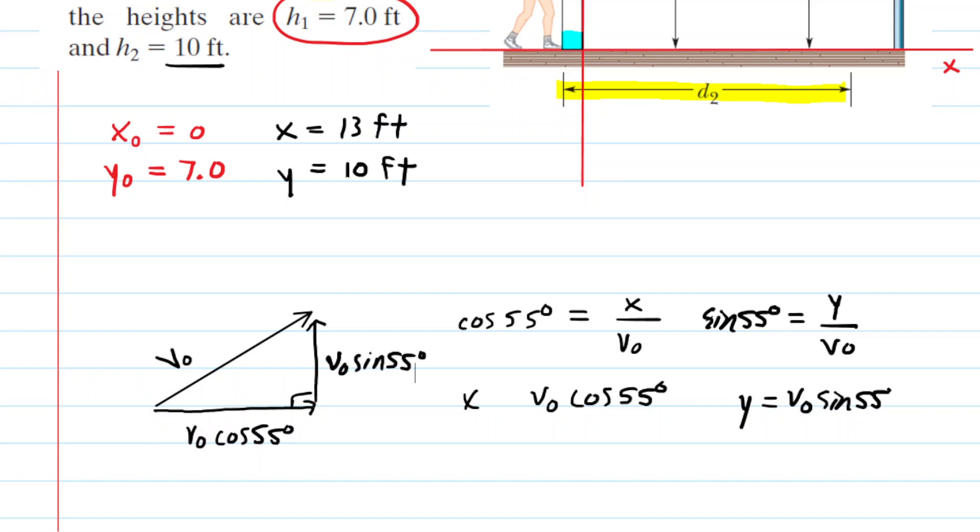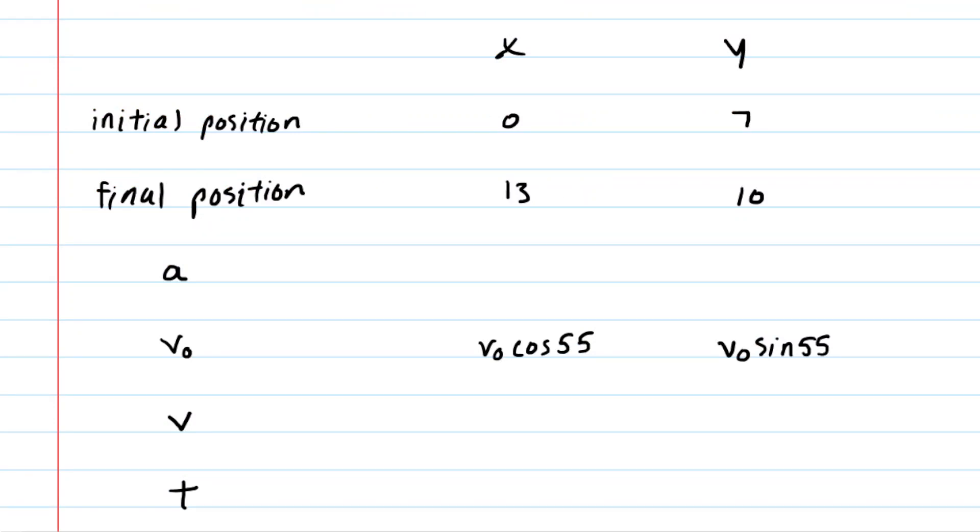Okay, so we have all the data organized in the way that we want. Now we're going to put it into a table to get a little bit even more organized. So here is a chart summarizing what we know so far. The initial coordinates of the basketball were 0, 7. The final coordinates were 13, 10. And then we have the initial x-component of the velocity and the initial y-component of the velocity. Now we know a little bit more in the y-direction because the acceleration in the y-direction is negative 32 feet per second squared. So we can fill that in.